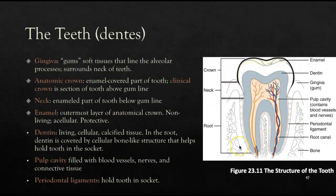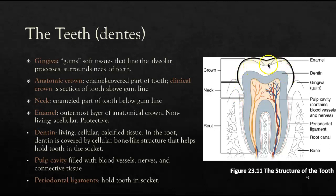Looking at an individual tooth, the gingiva (gums) are soft tissues lining the alveolar processes of the maxilla and mandible, surrounding the neck of the tooth. The anatomical crown is the enamel-covered portion of the tooth, while the clinical crown is the section above the gum line. The neck is the constriction just below the gum line. Enamel is the outermost, non-living, acellular layer that serves as an important protective factor.